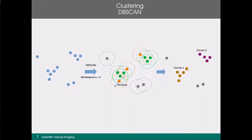We indicate in green all the localisations that are so-called core points — these are the localisations that surpass the threshold of having at least 3 localisations inside their circle. In orange, we see border points, for which there are fewer than 3 localisations inside their circle, but they are close to a high-density area in the sense that at least one core point lies inside their circle. Finally, we also have noise points indicated in grey, which do not lie in or close to a high-density area and will always be regarded as noise.